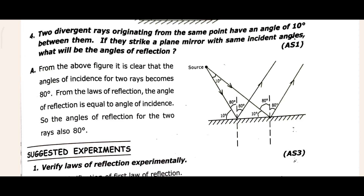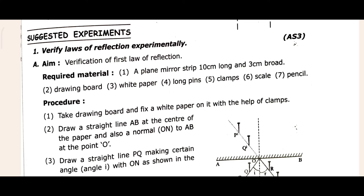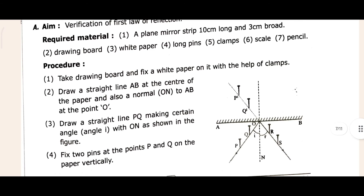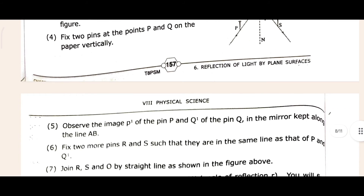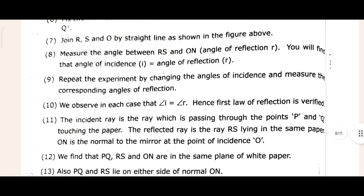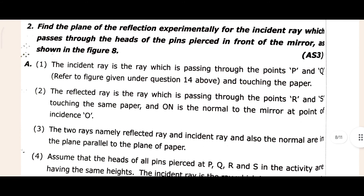If it is complete, come to the Suggested Experiment section. The first question is: verify the laws of reflection experimentally. We have to show the laws of reflection by doing an experiment. Points four, five, six, and seven are given here. After that, see the second question and the answer is below.